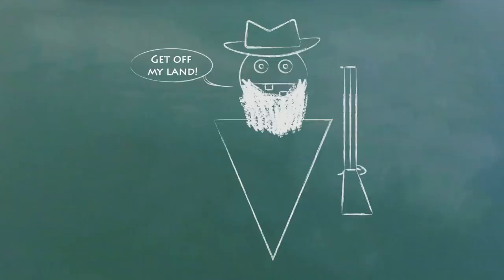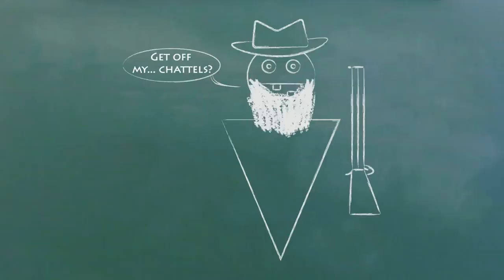You can be sued for things you intentionally do to property as well as for things you intentionally do to people. One tort about property is trespass. There's trespass to land and trespass to chattels.